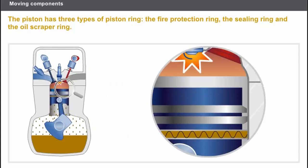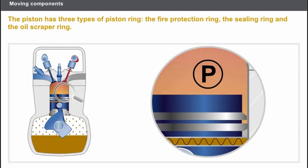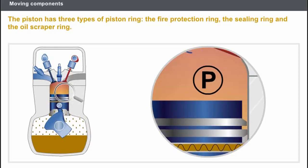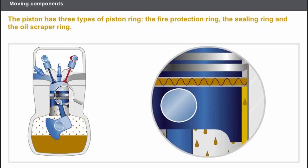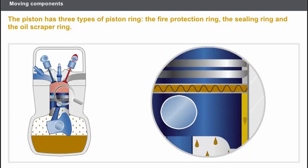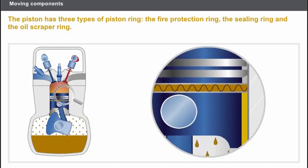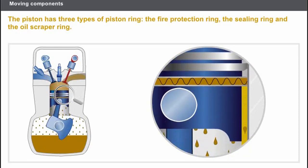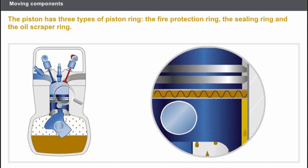The fire protective piston ring prevents the passage of flames towards the oil sump. The sealing ring maintains the gas compression. And the oil scraper piston ring prevents oil from flowing into the combustion chambers.